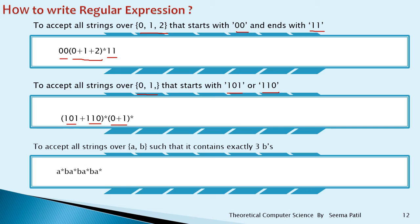To accept all strings over {a, b} that contain exactly 3 B's: write B three times because exactly 3 B's are required. Before each B there can be any number of A's, so write A*BA*BA*BA*. The star means A can occur or not occur.